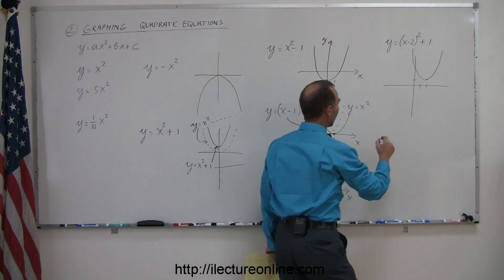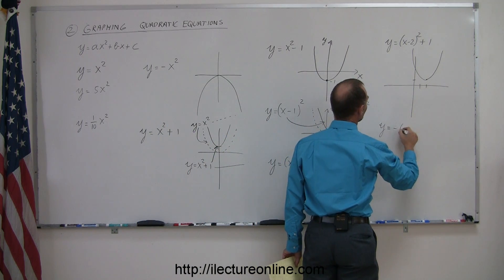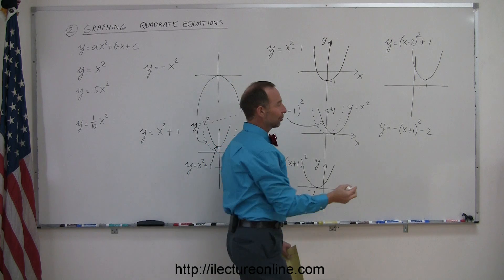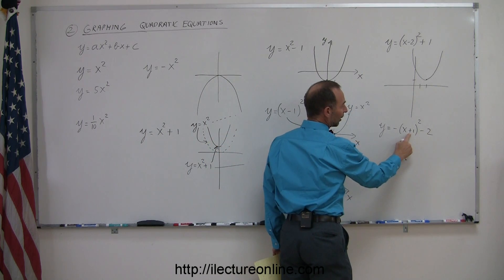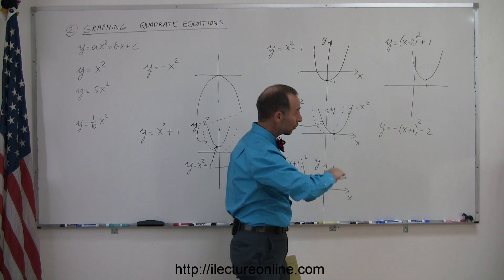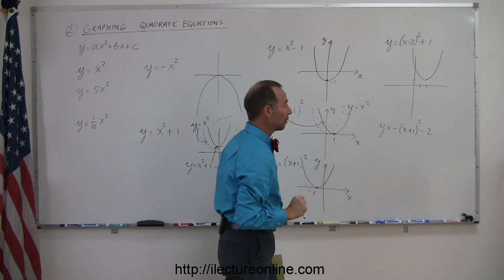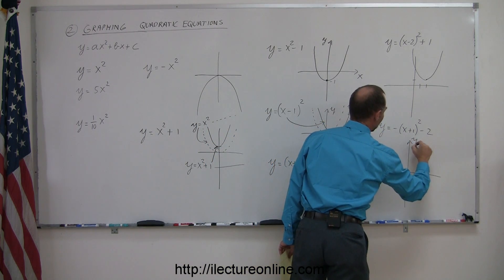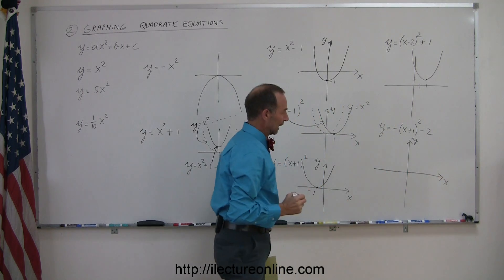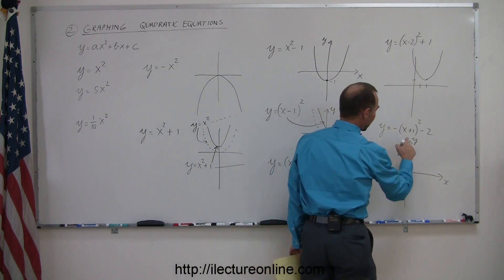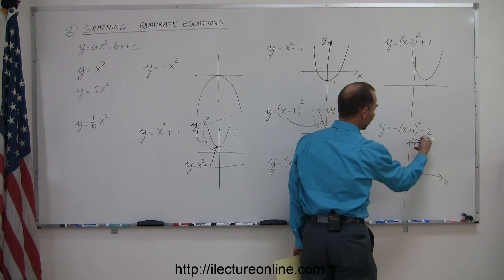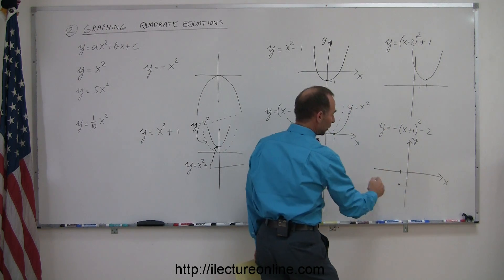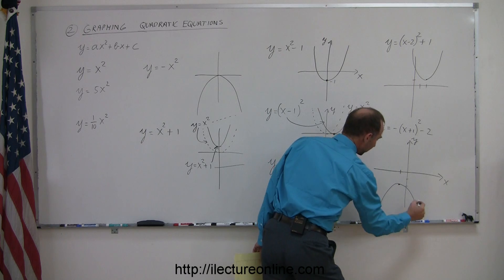What if you had y equals minus the quantity x plus one squared minus two? The whole parabola would shift down two units, shift to the left one unit, and the parabola would open downward because of the minus x squared term when you multiply it out. The vertex is at x equals minus one, y equals minus two, and the parabola opens downward.